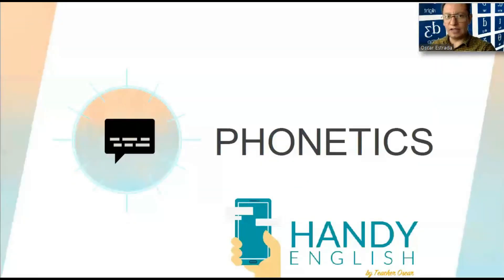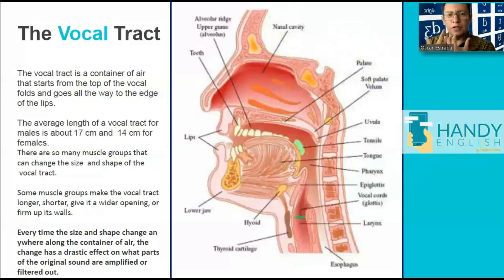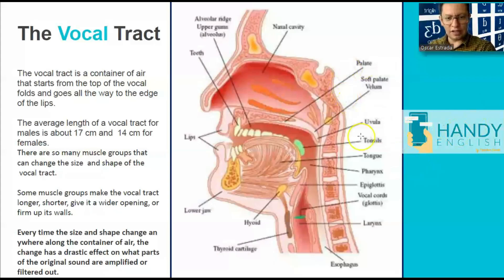Now we're going to concentrate on phonetics and phonology for this lesson. Phonetics is just the study of the sounds that we produce when speaking. In order to produce sounds, we have the vocal tract. The vocal tract, as you can see in this image, is all the parts of our body that are involved in producing sounds — everything related to internal organs of our head, but it also includes the larynx, and in some charts the diaphragm is included as well. I recommend you to take a look at this image and memorize the vocal tract.